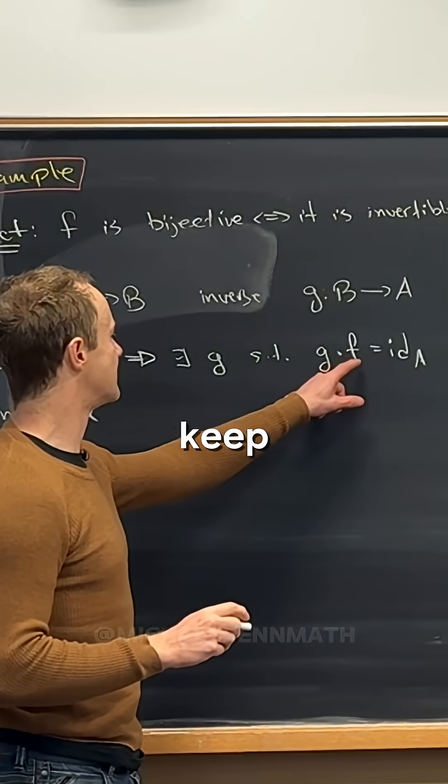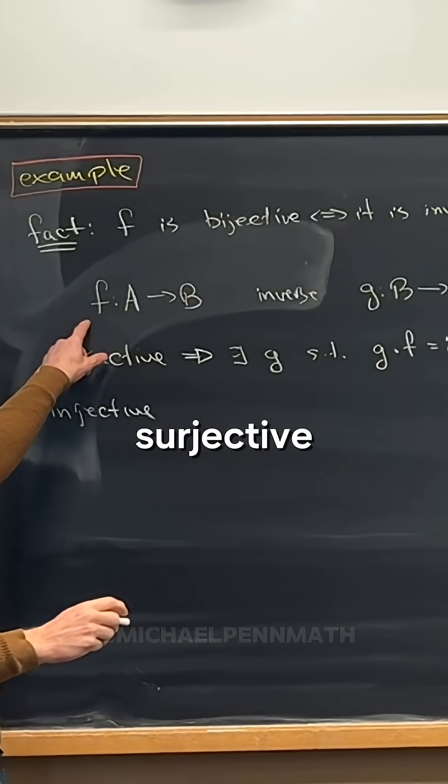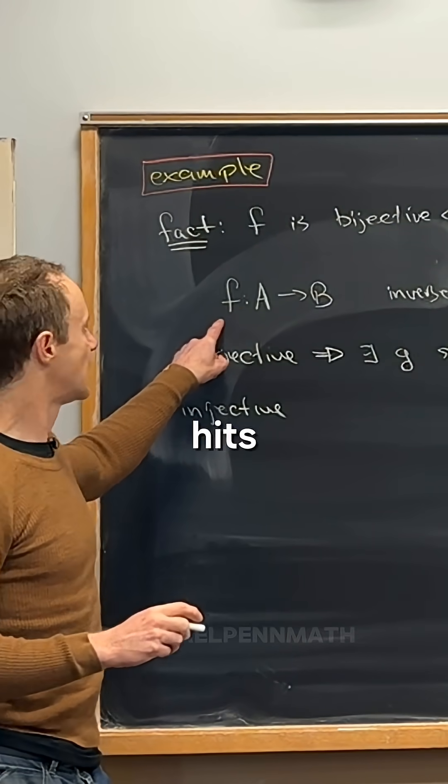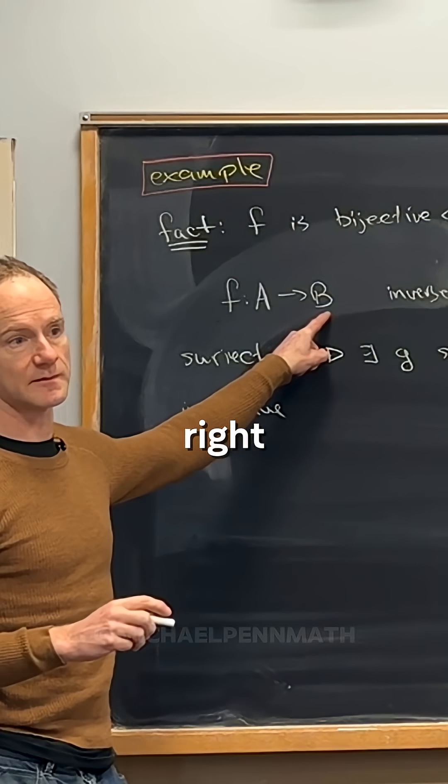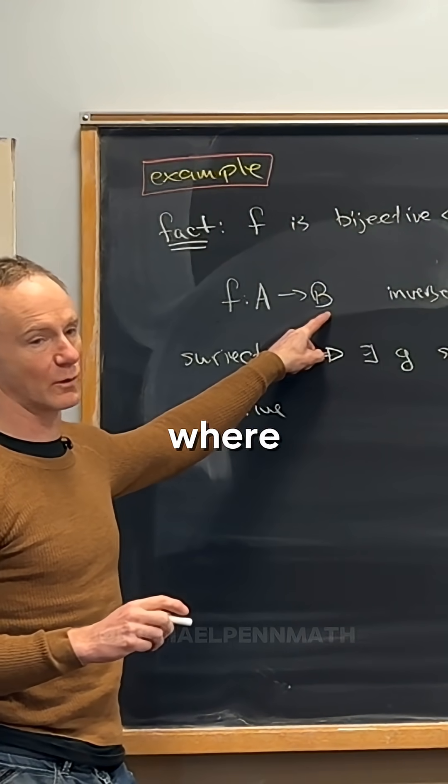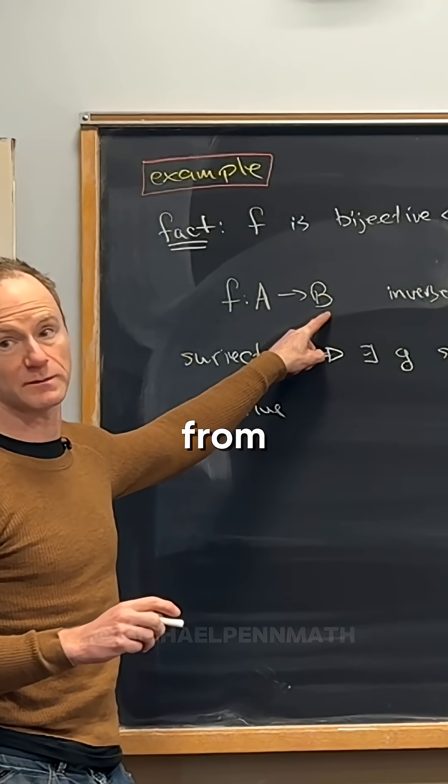So you can kind of keep this in mind because if it's surjective, then this function f hits everything in B. Then you have a starting place for where to send those things from B.